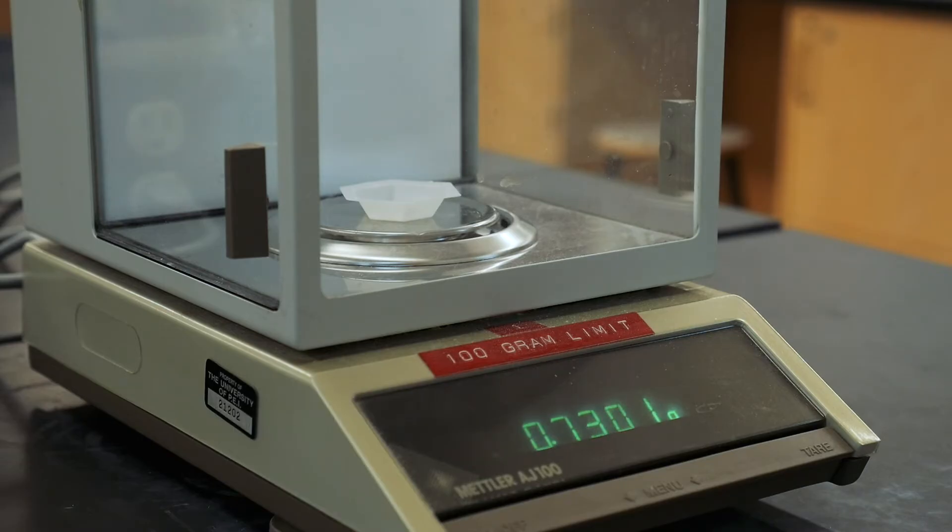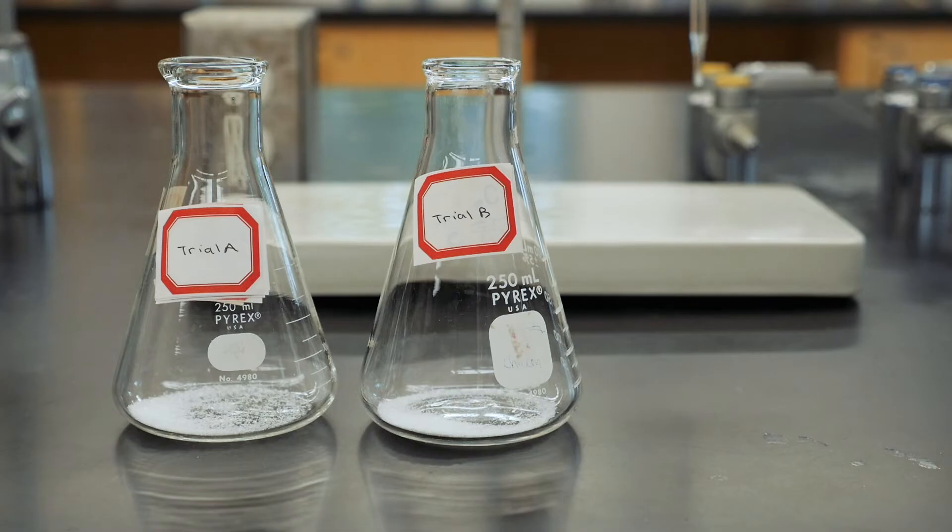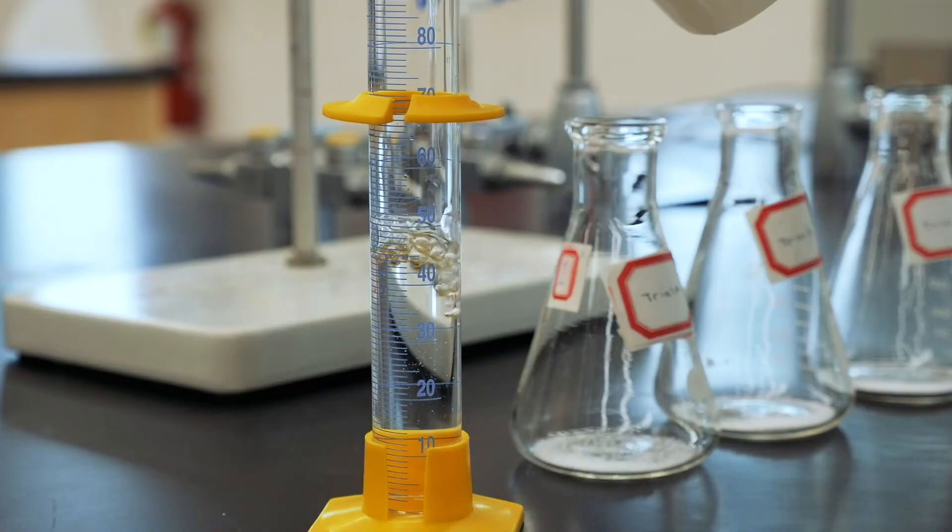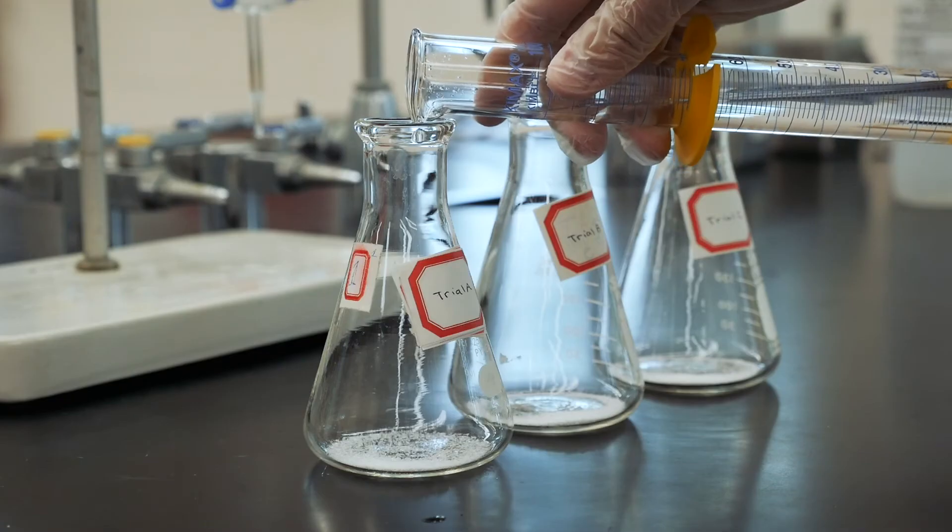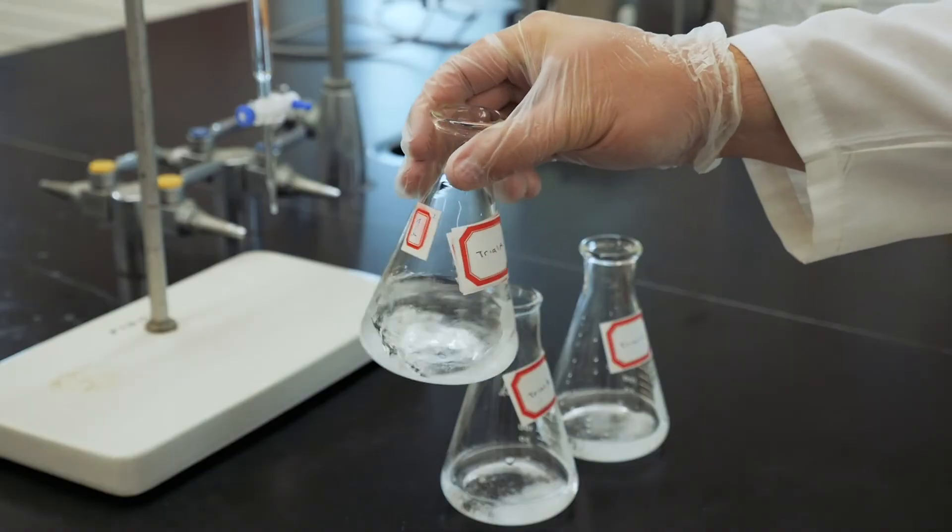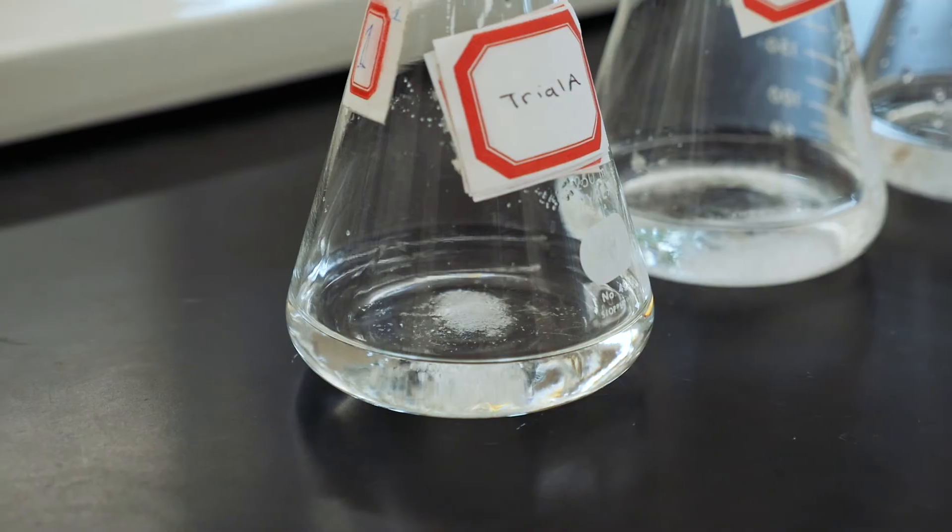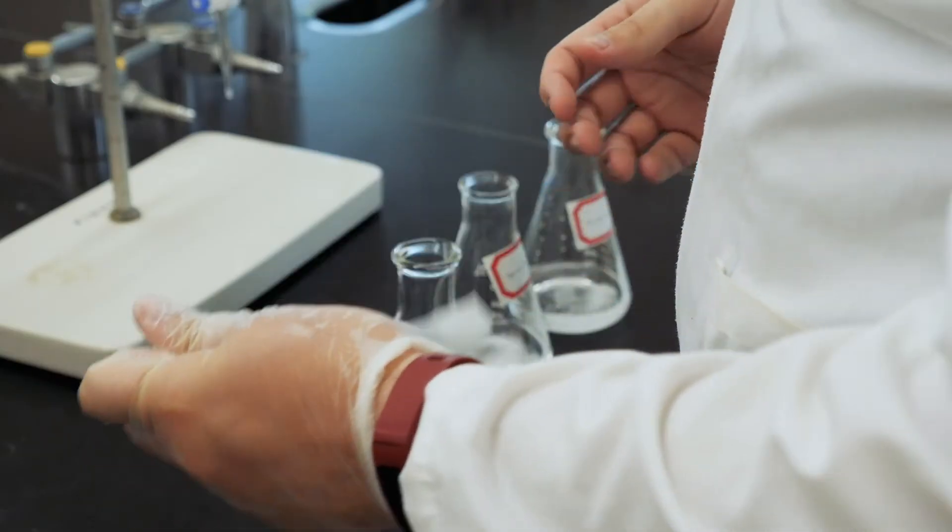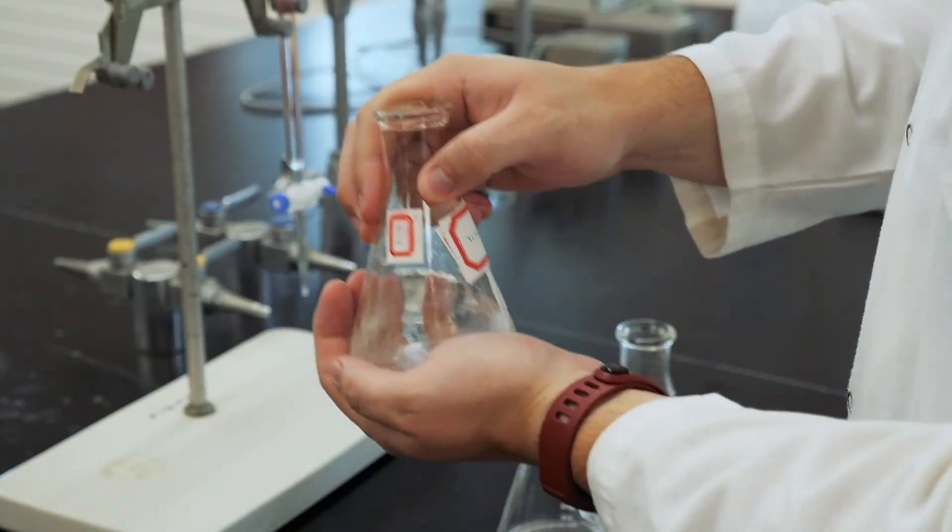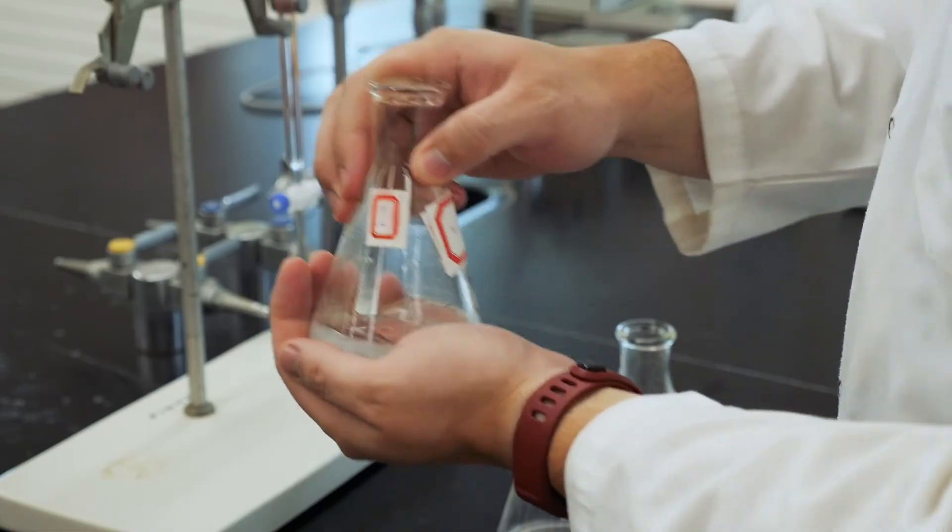Prepare two more samples of KHP because you'll need three sets of data today, and be sure to label them so you don't get confused. To each sample, add about 50 mL of deionized water to dissolve the KHP. It's often difficult to completely dissolve the KHP, so try taking off your gloves, rubbing your hands together to make them warm, and then swirl the flask in your warm hands to help the dissolution process.